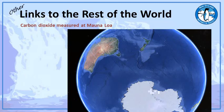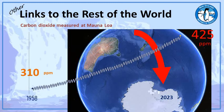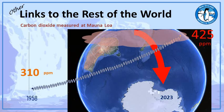Moving on to carbon dioxide: CO2 has been recorded at Mauna Loa in Hawaii — the longest continuous record. It started in 1958 at 310 parts per million and by 2023 had reached about 425 parts per million. 400 parts per million is seen as a line in the sand — the last time there were 400 ppm of CO2 in the atmosphere, camels were walking around in the Arctic, and that was two and a half million years ago.